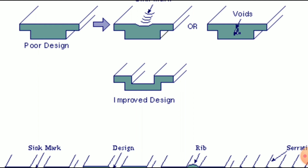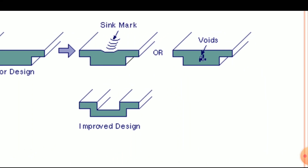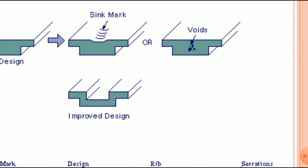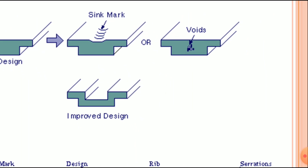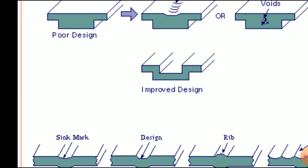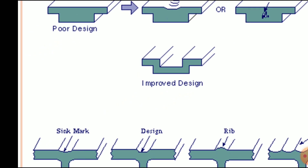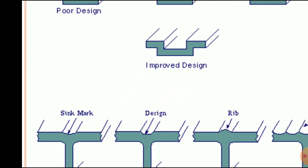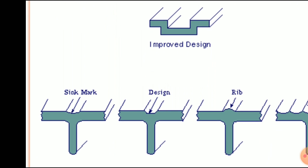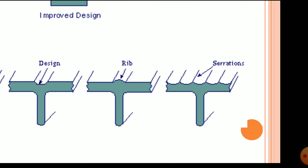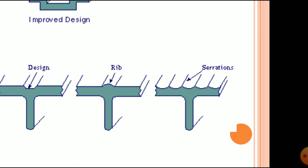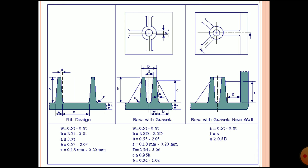At this area you can see a poor design where a sink mark will occur. Bubbles or voids can also be found at higher or bigger wall thickness areas. An improved design is to provide a step there or improve the overall design. Sink marks can be avoided by using proper design considerations. Those are a few standards when designing ribs and bosses with different wall thicknesses.